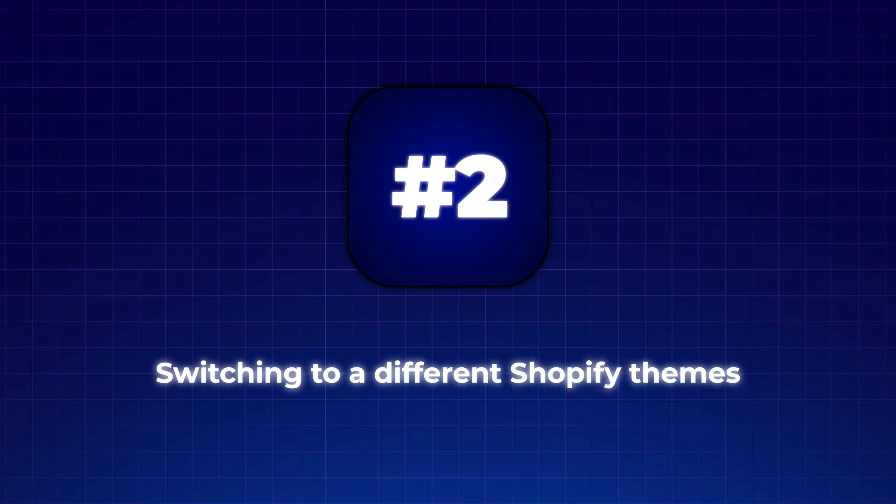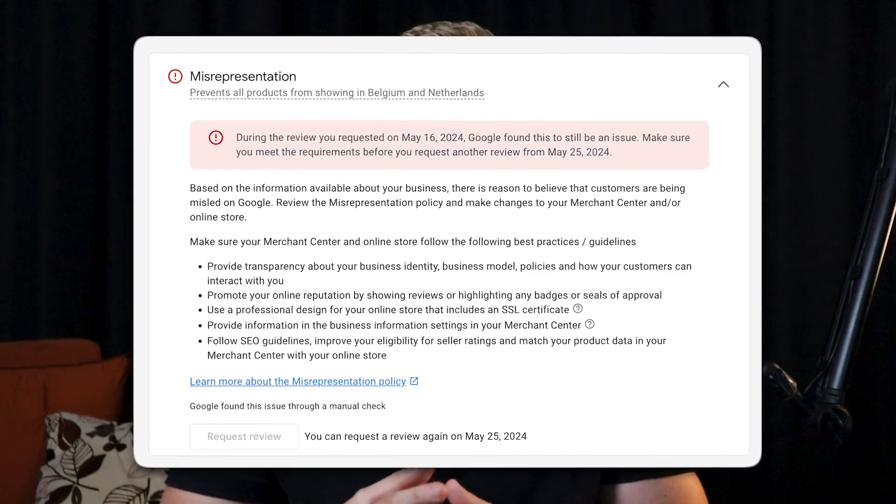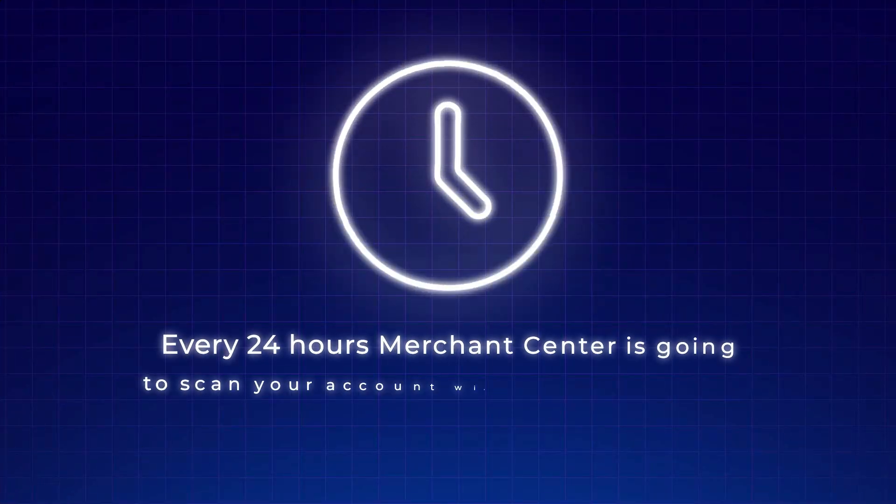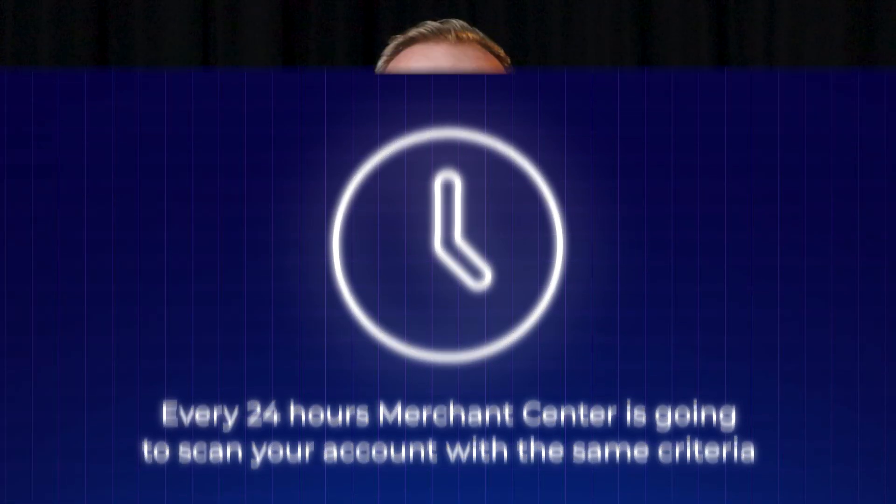Statement number two: some people think they can unblock their Merchant Center by switching to a different Shopify theme during the review and then switching back afterward. This is totally false. Merchant Center scans your account on a daily basis using the same criteria, so if you switch to a simple default theme and then revert after the review, you can wake up the next day with the suspension again. You need a good website right from the start that can be reviewed, unblocked, and kept live on Google Ads.